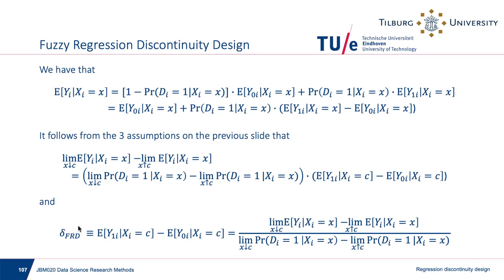The parameter delta_FRD (fuzzy regression discontinuity) — defined as E[y1i|xi=c] minus E[y0i|xi=c] — is given by the jump in the observed outcome divided by the jump in the treatment probability. For estimation, we run four linear regressions: two for the outcome (left and right of cutoff) and two for di (left and right of cutoff), using the same specification yi = alpha + beta(xi - c). The ratio of the two estimated discontinuities gives delta_FRD. If the treatment probability change were 1 — as in the sharp design — the denominator would be 1 and we recover the sharp result.